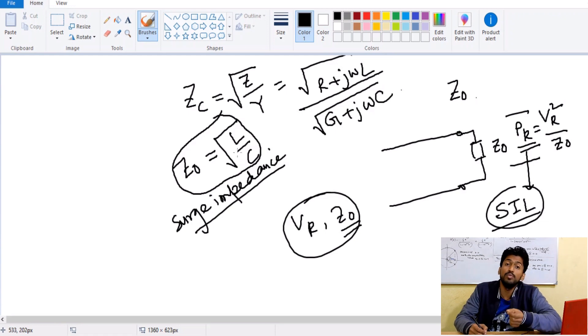If we do that, in case of shunt capacitors, what is going to be happening? The Z naught value will decrease, but the stability will not be there because charging current can actually cause instability to the system.